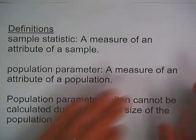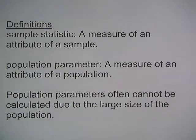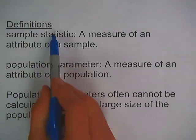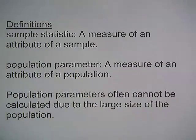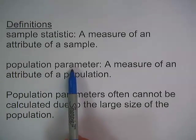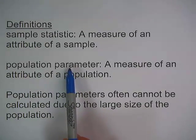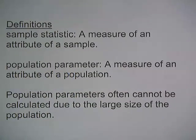Let's define both of those two terms. A sample statistic is a measure of an attribute of a sample, and a population parameter is a measure of an attribute of a population. Statistic always goes with sample; parameter always goes with population. Population parameters often cannot be calculated due to the large size of the population, so many times a population parameter will need to be estimated — most commonly by using the corresponding sample statistic.